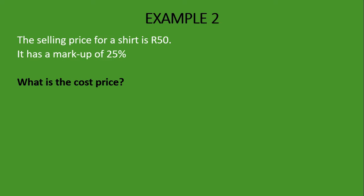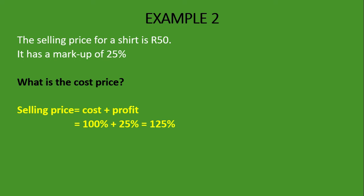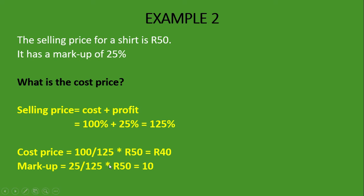Now a more complex example. The selling price for a shirt is 50 Rand and it has a markup of 25%. What is the cost price? With the markup, the cost price is equal to 100%, so the selling price is 125% — cost price 100% plus markup 25%. To find the actual cost price: 100% divided by 125% times 50 Rand gives us a cost price of 40 Rand. The markup is 25% divided by 125% times 50 Rand, giving us 10 Rand profit. So cost price 40 Rand plus markup 10 Rand equals selling price 50 Rand.